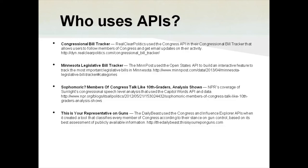What you see on your screen now are four examples of some media outlets that have used our APIs that we're going to be talking about today. The website RealClearPolitics uses our Congress API in their Congressional Bill Tracker. It allows users to follow members of Congress and get email updates on their activities. When you visit RealClearPolitics, their Congressional Bill Tracker will identify where you're from using a geolocation feature, and it'll pull up information such as who's your representative in Congress and their district map.